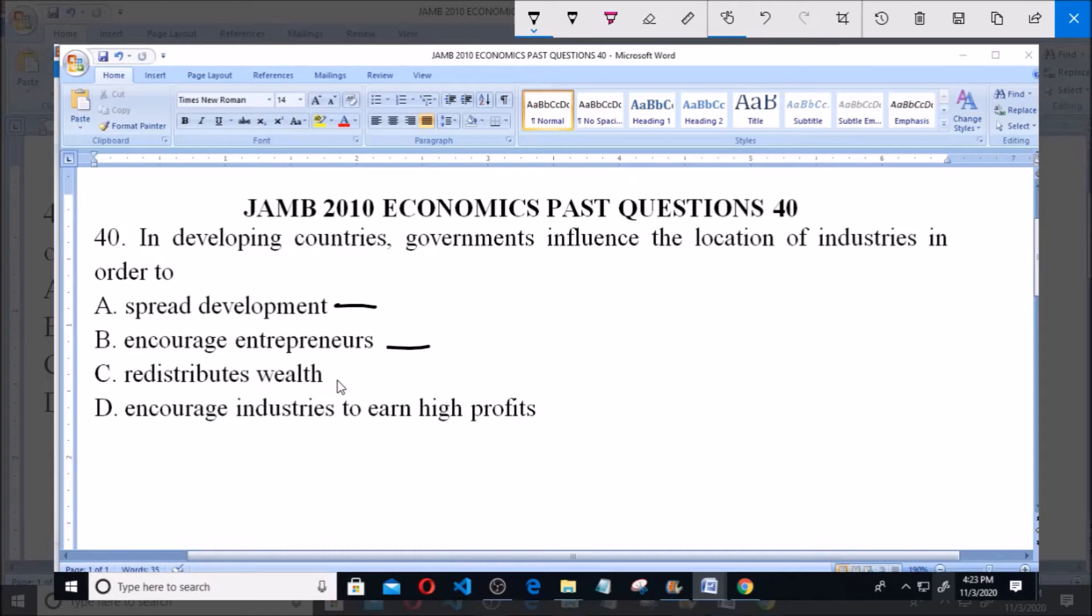Option C: redistributes wealth. Option D: encourage industries to earn high profits. So the following are the major contributions of...